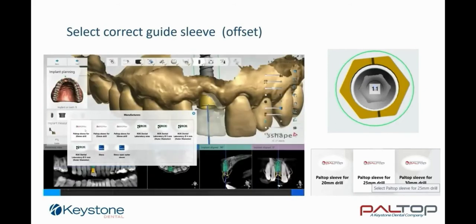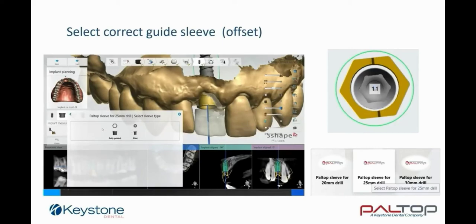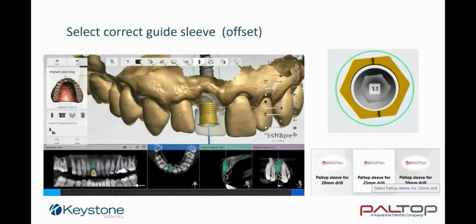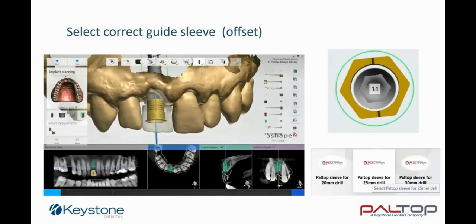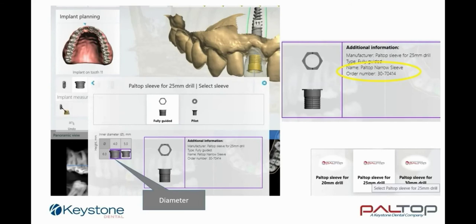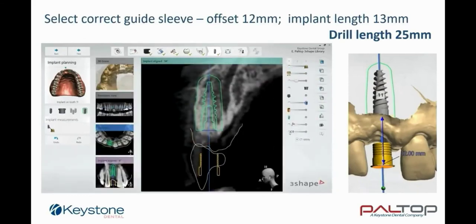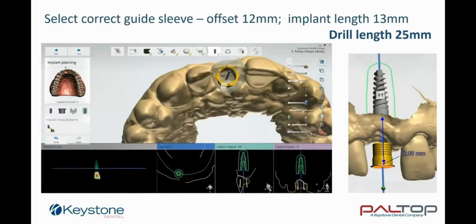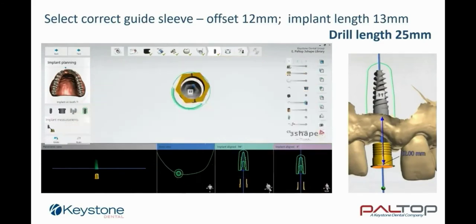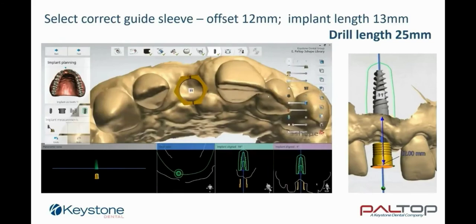The Paltop System Guide Sleeve Library has now been updated. You may choose the sleeves in accordance to the desired drill length: 20, 25 or 30 millimeters. Ensure that the guide sleeve is above the level of the soft tissue, particularly in cases where a flapless protocol is to be carried out. For each drill length, you may choose between the wide or the narrow diameter — in this case, the narrow diameter sleeve was chosen. The guide sleeve functionality will automatically set the correct offset in accordance to the drill and implant length. In this case, the implant length is 13 mm and the drill length 25 mm, thus the offset was set at 12 mm.